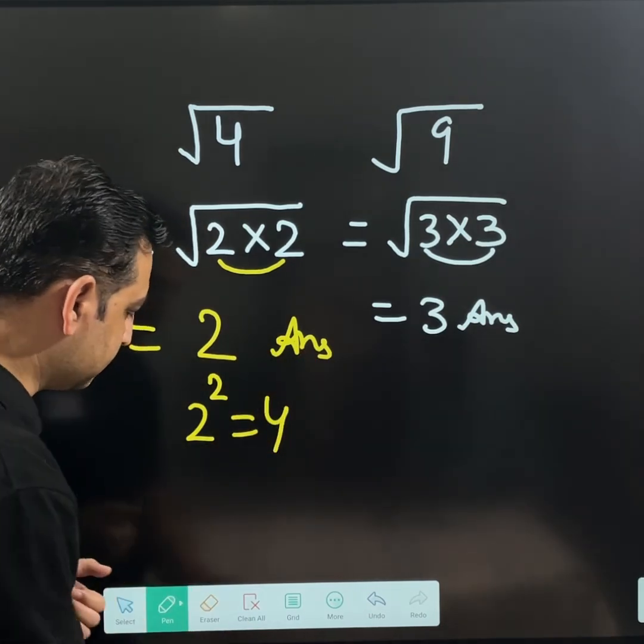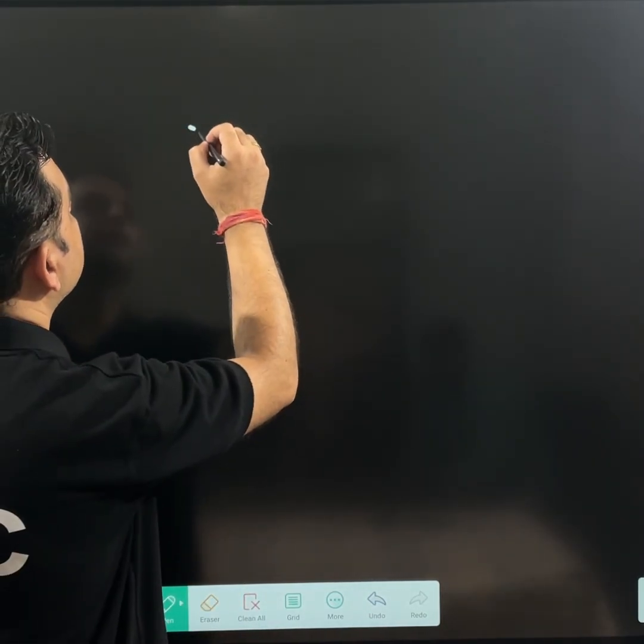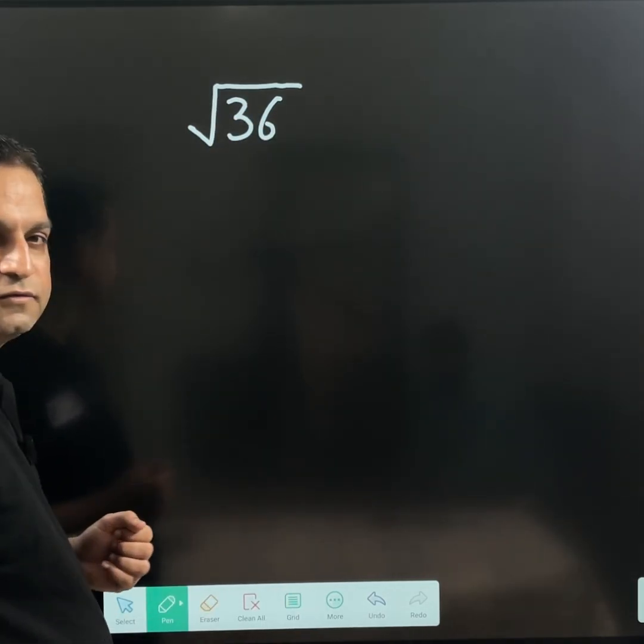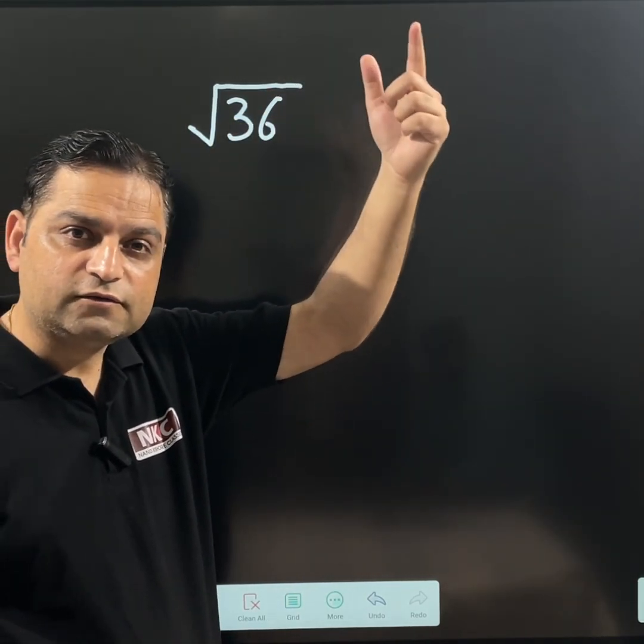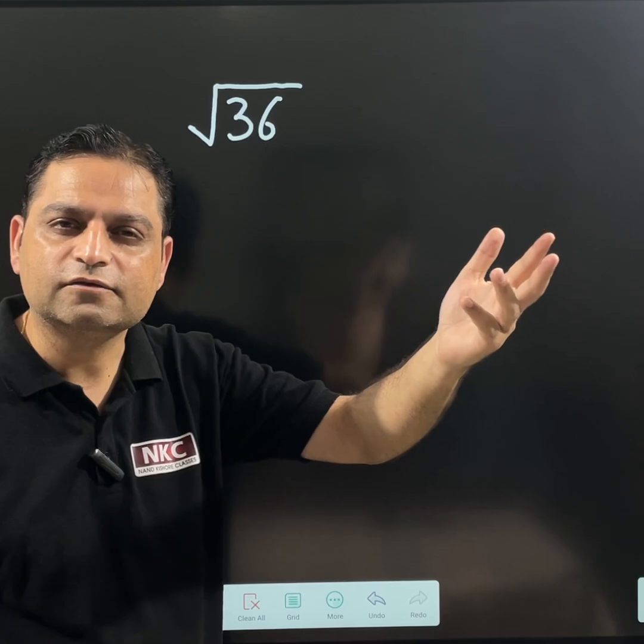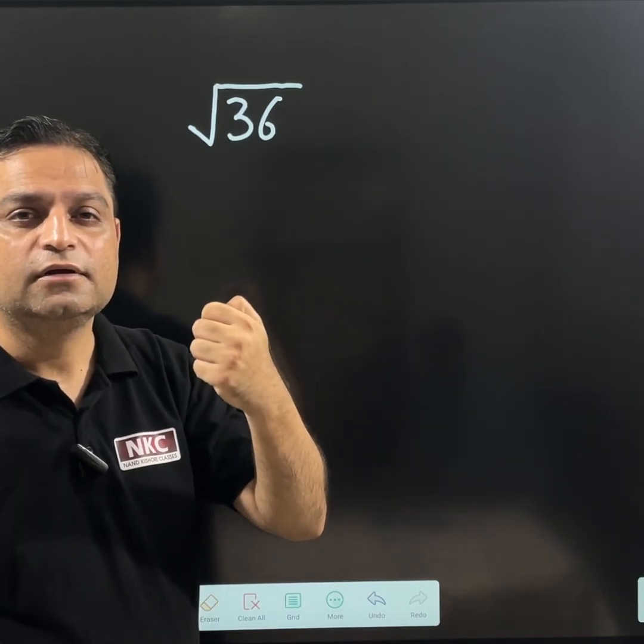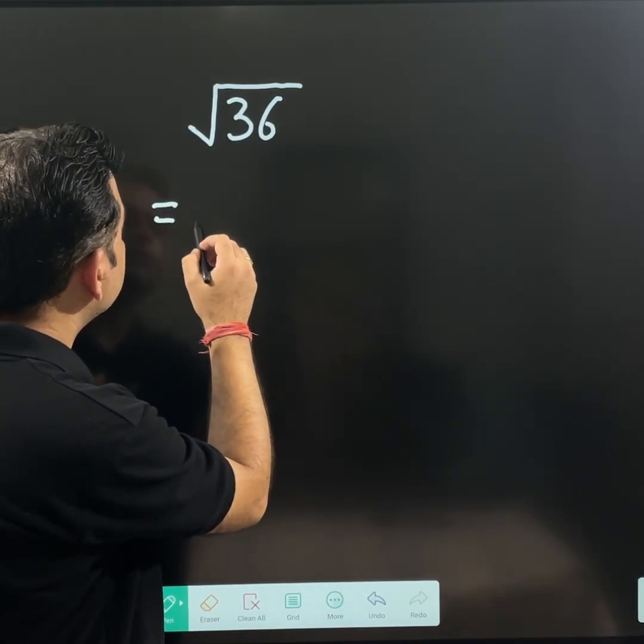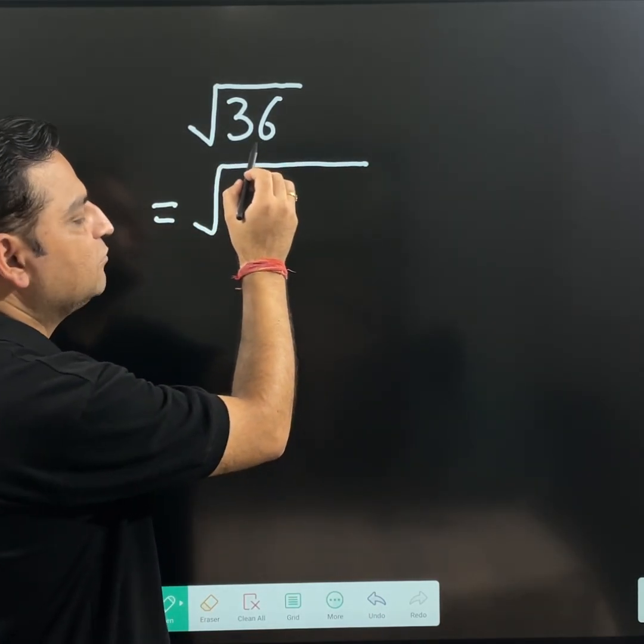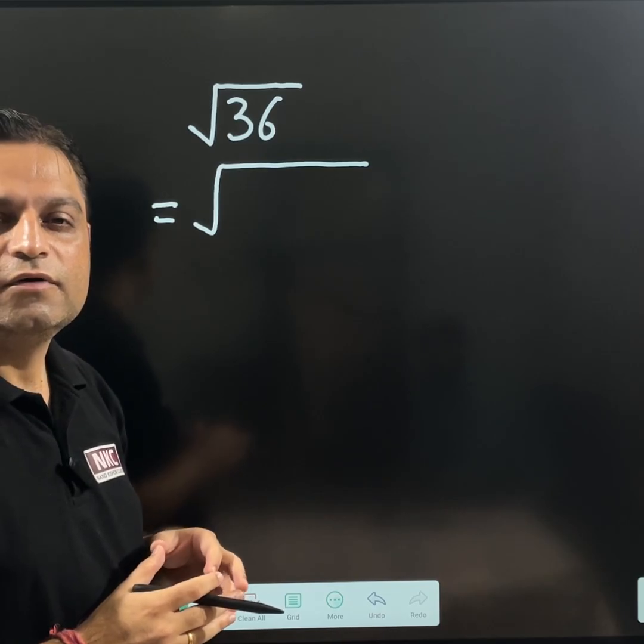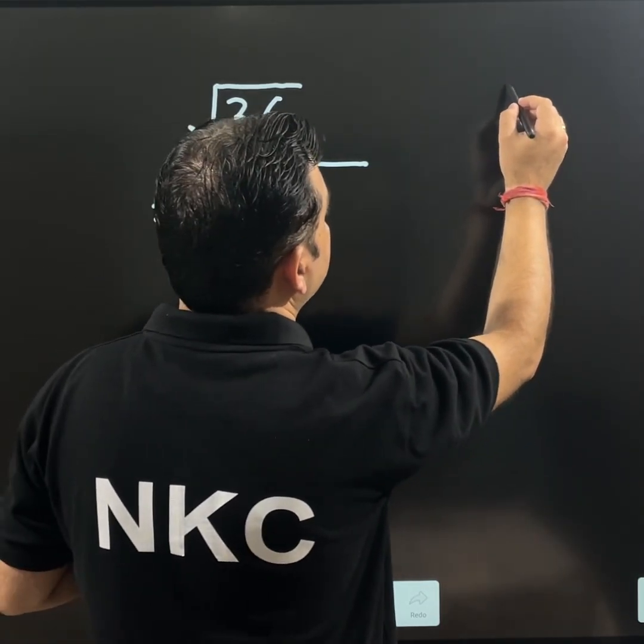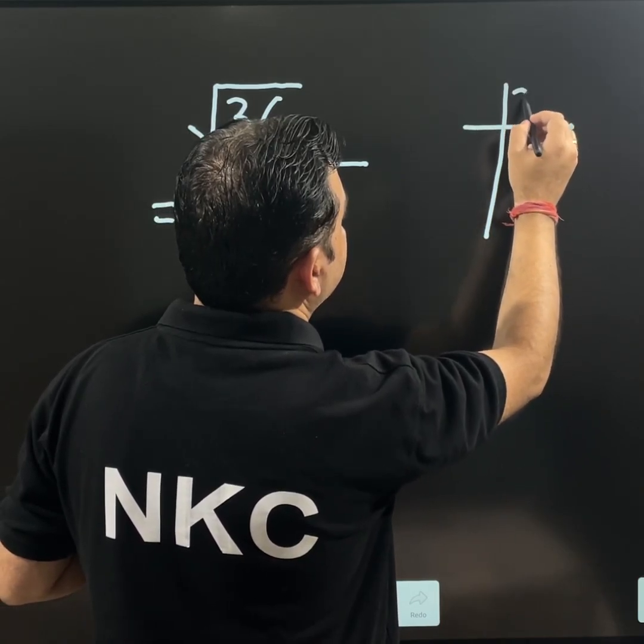I am going to show you another example. For example, let us suppose you have to find square root of 36. Even though I know that 6 square is 36. So, this answer will be 6. But let us try to apply prime factorization method. Now, many students sometimes face problems while prime factorizing this 36. So, I am going to tell you an easy way.